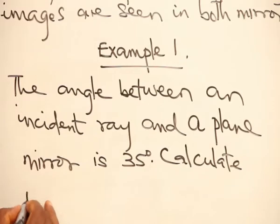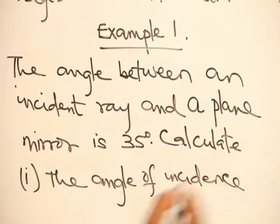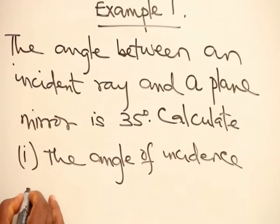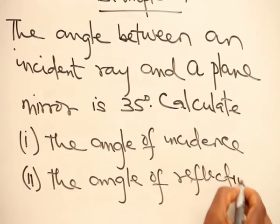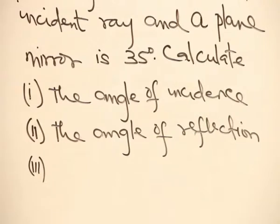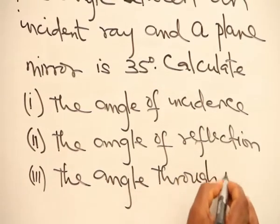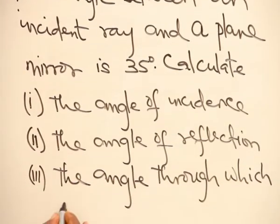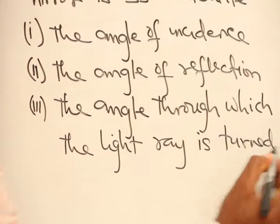Calculate number 1, the angle of incidence. Calculate number 2, the angle of reflection. Calculate number 3, the angle through which the light ray is turned. Calculate number 4, the angle of reflection.